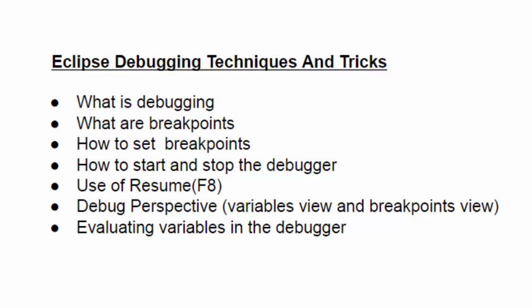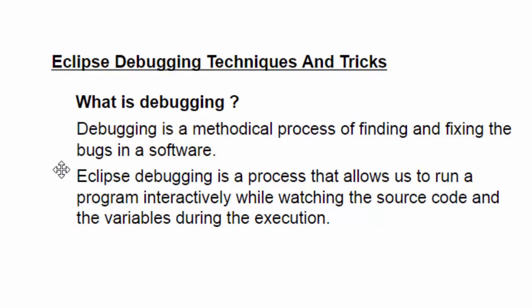Now to start with, what is debugging? Debugging is a methodical process of finding and fixing the bugs in a software. Specifically, Eclipse debugging is a process that allows us to run a program interactively while watching the source code and the variables during the execution.